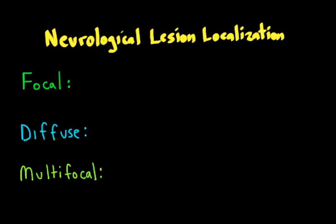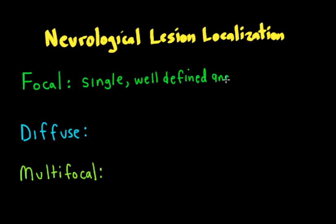Looking at the different kinds of lesions — focal, diffuse, and multifocal — we need to define these terms. Focal lesions are single, well-defined anatomical lesions that occur in the nervous system. We can point at it and say, there it is — it's a focal lesion.